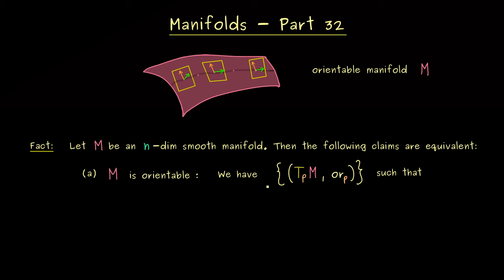And this means, we use the definition from the last video. Hence, we can choose such a family of orientated tangent spaces, which means, for every point p on the manifold, we have such a pair. And moreover, this family should satisfy that we find a collection of charts such that every coordinate basis like that is positively orientated. Or to say it more precisely, it's an element of the chosen orientation. Okay, and this is exactly what we mean when we say we have an orientable manifold.